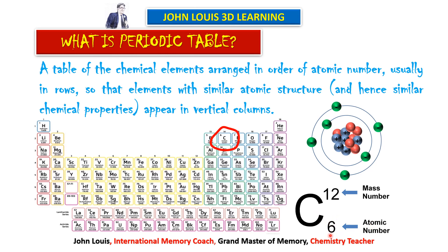For carbon, atomic number is 6 — that means the number of electrons is 6 and number of protons is 6. What is mass number? It is the sum of protons and neutrons. Here the number of protons equals the number of neutrons, both 6, therefore 6 plus 6 is 12 — that is the mass number.